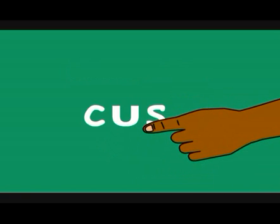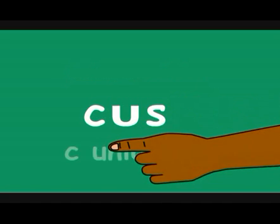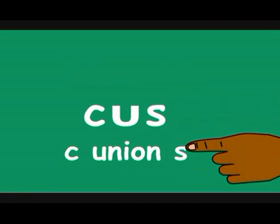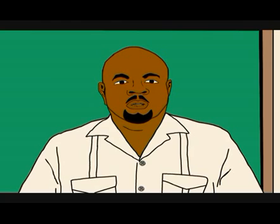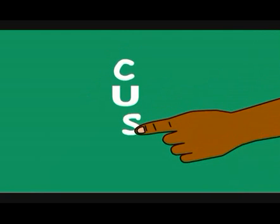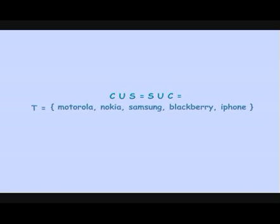So, we use that symbol: C union S would read C union S, because that U represents union. C union S is the same thing as S union C. It doesn't matter which letter comes first — what we are saying is that we are joining two sets together. So, C union S equals S union C equals T equals Motorola, Nokia, Samsung, Blackberry, and iPhone.